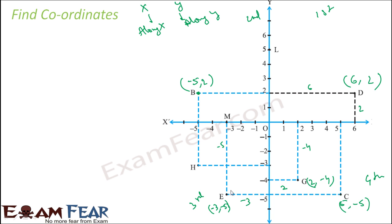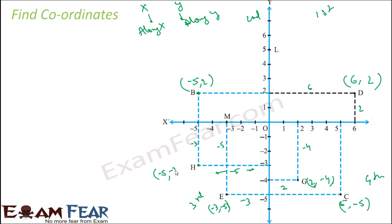For point G, x is positive and y is negative. For point H, the x-coordinate along the x-axis is minus 5 and the y-coordinate along the y-axis is minus 3, giving minus 5 comma minus 3. This is in the third quadrant where both x and y are negative.